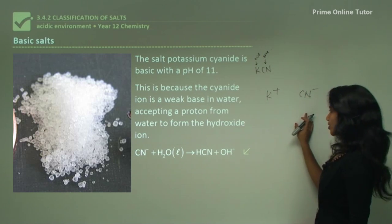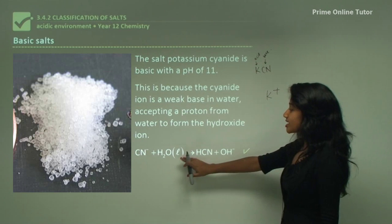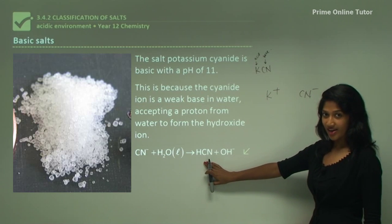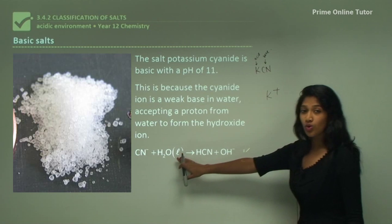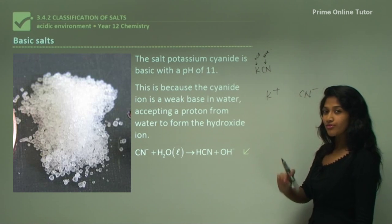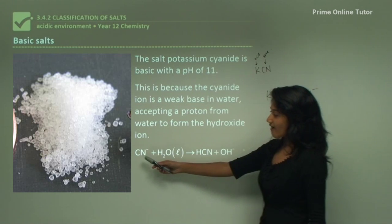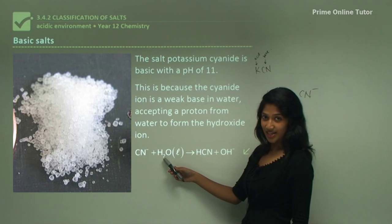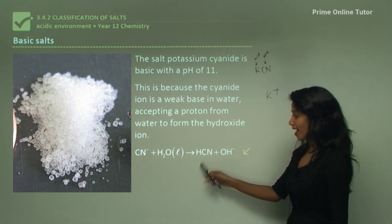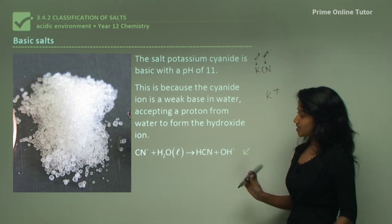The cyanide anion, being a weak base, reacts with water and accepts a proton — a hydrogen ion — forming hydrogen cyanide. The water then forms its conjugate base, the hydroxide ion. We can see the conjugate pairs here: the cyanide ion is the base and hydrogen cyanide is its conjugate acid, while water is the acid and hydroxide is its conjugate base.